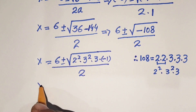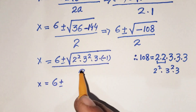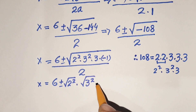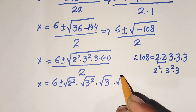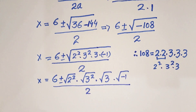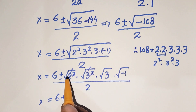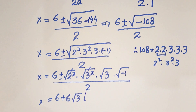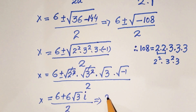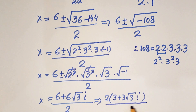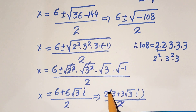So inside the square root we have minus 108, written as 2 squared times 3 squared times 3 times minus 1. Separating the square roots, we get square root of 2 squared times square root of 3 squared times square root of 3 times square root of minus 1, which gives us 2 times 3 equals 6, so 6 square root of 3 times i, all over 2.